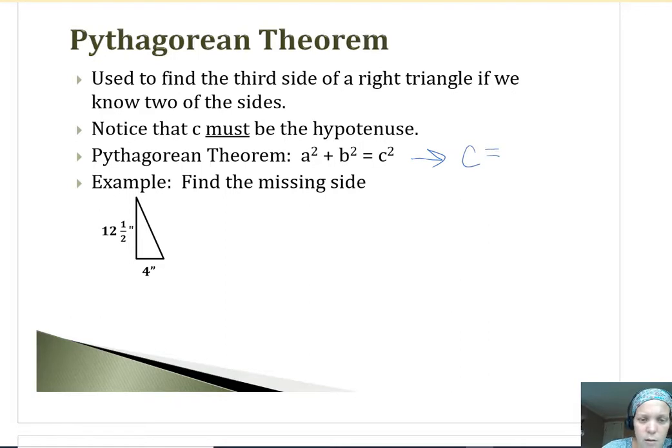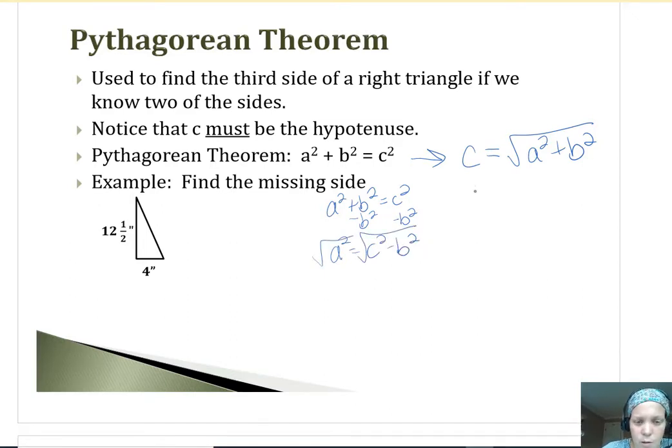So first of all, if I want to find C to get rid of that squared, we do the square root, right? So C would always equal the square root of A squared plus B squared. Now if I were to find A, let's manipulate this for A. I'm going to rewrite it here. If I want to solve for A, we'd have to subtract B squared. And then we'd have to do the square root of both sides. So A would always equal the square root of C squared minus B squared. Now because of that plus and because of the minus, you can't cancel the square root of the squared. You just have to leave it like that.